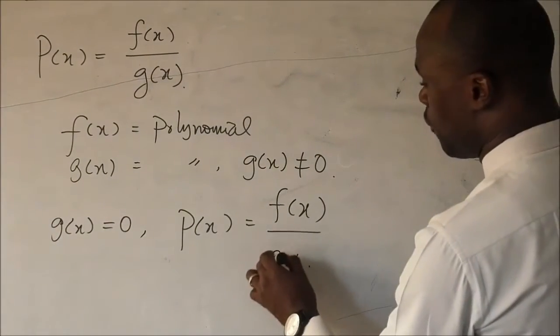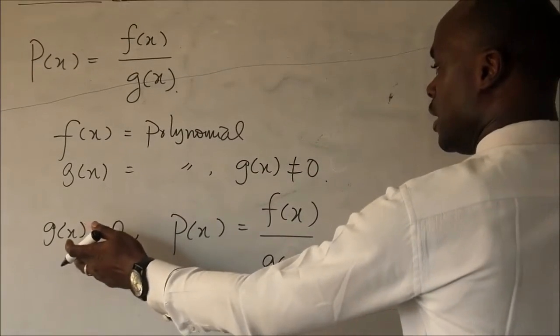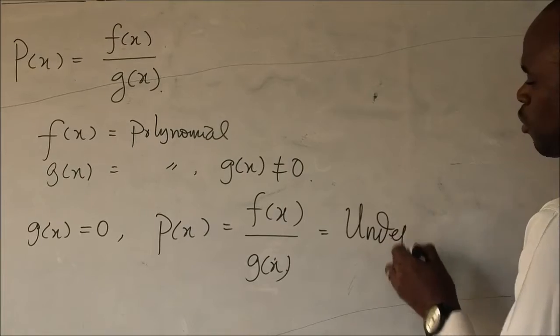But in this case, I'm going to put g of x as this, knowing that it's already zero here. So in this case, it becomes what we say in mathematics, undefined.